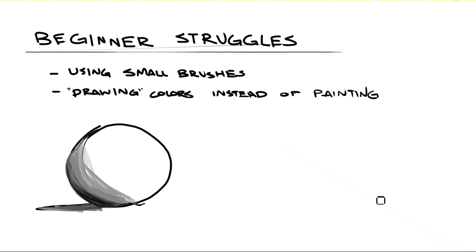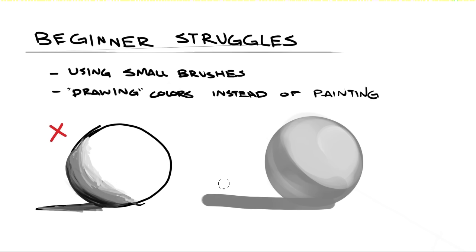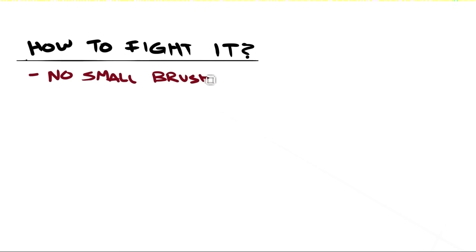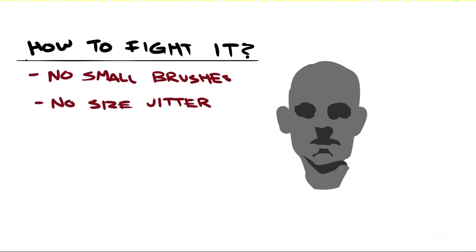Ideally, you should be approaching painting with the biggest brush possible and only focusing on larger, chunky blocks of color and value. You should only work your way towards smaller brushes and lines once the painting is nearly complete. It's easy to fight this beginner mistake before it becomes a bad habit, so make a conscious effort to keep yourself from using small brushes, and turn off that size jitter. Otherwise, you'll just be pressing lightly to make thinner strokes everywhere — you really don't need it.